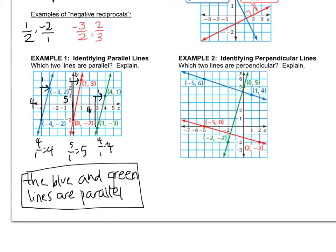Let's look at example two. We have to look at which two lines are perpendicular, and as you just figured out, we're looking for negative reciprocal slopes. And remember, perpendicular lines make a right angle.